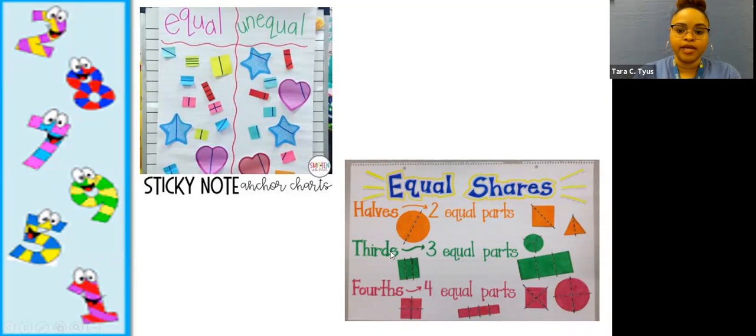So as you can see, we have this example of the equal shares anchor chart to help you see that visually what they will be doing and what we mean by partitioning shapes. Notice that when they partition shapes, they have to be equal shares. They need to be equal parts. And here we have an example of an anchor chart with equal and unequal. So equal is the correct way to partition shapes, and they will be learning more about that.